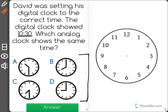10:30, that means that our hour hand is going to be pointing halfway between the 10 and 11, because it's halfway through the hour, and our minute hand will be pointed down at the 6.